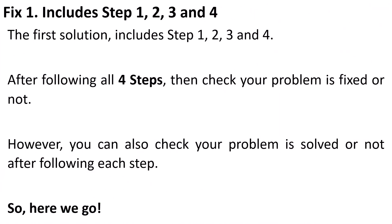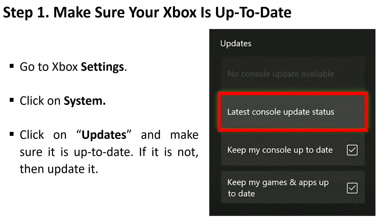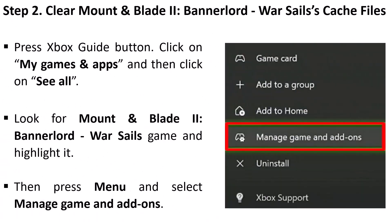The first fix includes steps one through four. After following all four steps, you can check if your problem is fixed. You can also check after each individual step. Step one: make sure your Xbox is up to date. Go to Xbox Settings, click on System, click on Updates, and make sure it is up to date — if not, update it. Step two is to clear the Mount and Blade 2: Bannerlord cache files, so press the Xbox button.